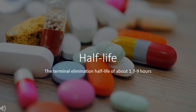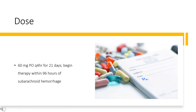Nimodipine has a half-life of 1.7 to 9 hours. For subarachnoid hemorrhage, it is indicated for the improvement of neurological outcome by reducing the incidence and severity of ischemic deficits. The dosing regimen is 60 mg orally every 4 hours for 21 days, with therapy beginning within 96 hours of the subarachnoid hemorrhage.